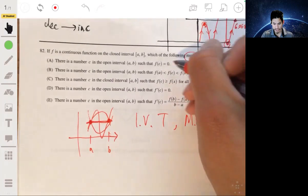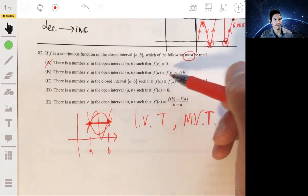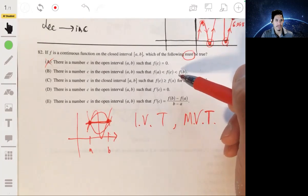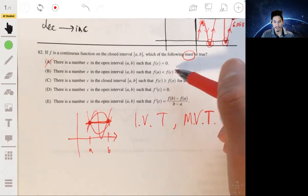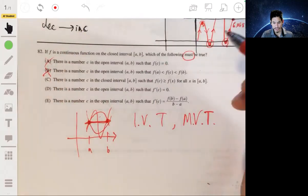This must be true keyword. So A doesn't have to be true. Same thing for B. It doesn't have to change value. Maybe they're all the same values. There doesn't have to be a value between A and B. Again, they all could be the same. It could be a horizontal line, so not B.